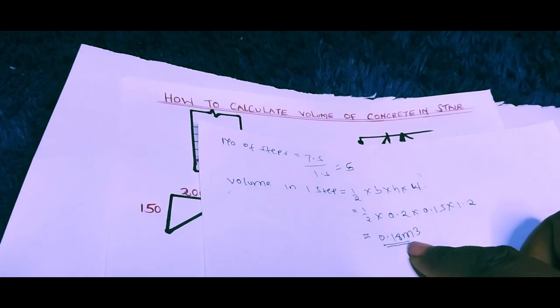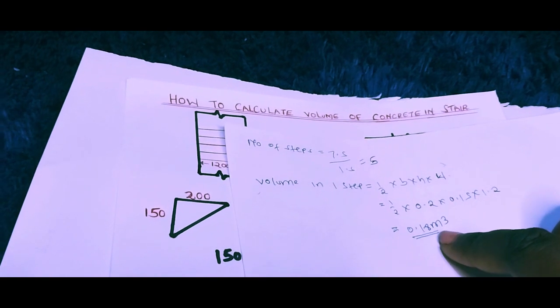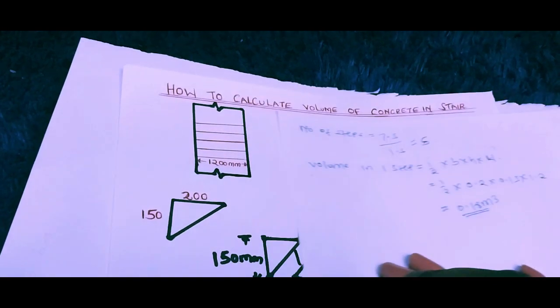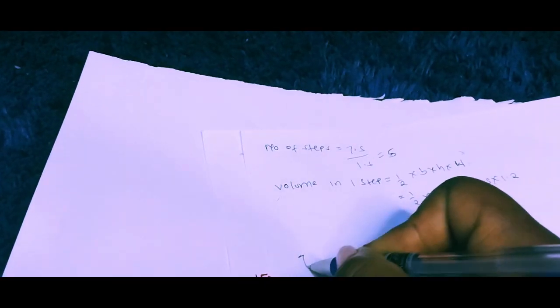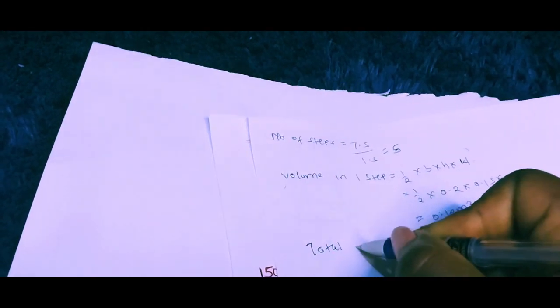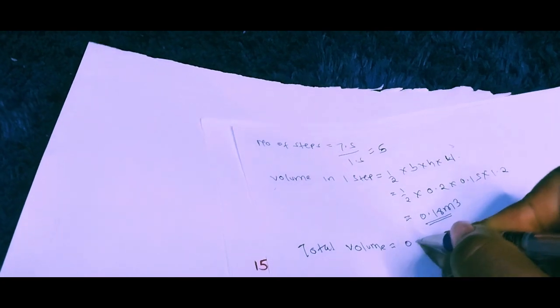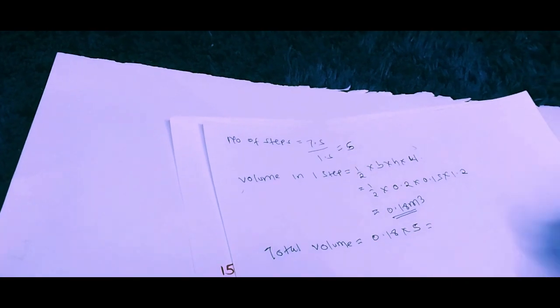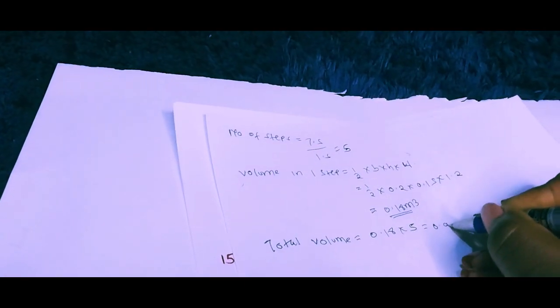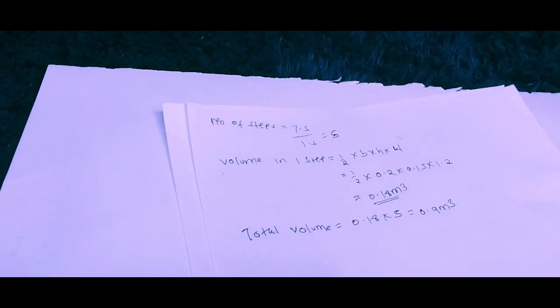That is the volume in one step. Now let's find the total volume in all the steps. We multiply the volume of one step — 0.018 m³ — by the number of steps, which is 5. That gives us a total step volume of 0.09 cubic meters.